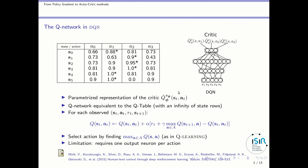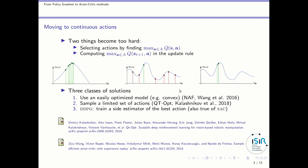If you have continuous actions, you cannot have one neuron per action because you have an infinite number of actions. So there are two limitations when you want to move to continuous actions. One consists in selecting actions by finding the max over the actions for a given state — that's an optimization problem; you want to find the max in a continuous domain. The other is in the update rule, where you also need to find the max over the actions of the Q-values in the next state.